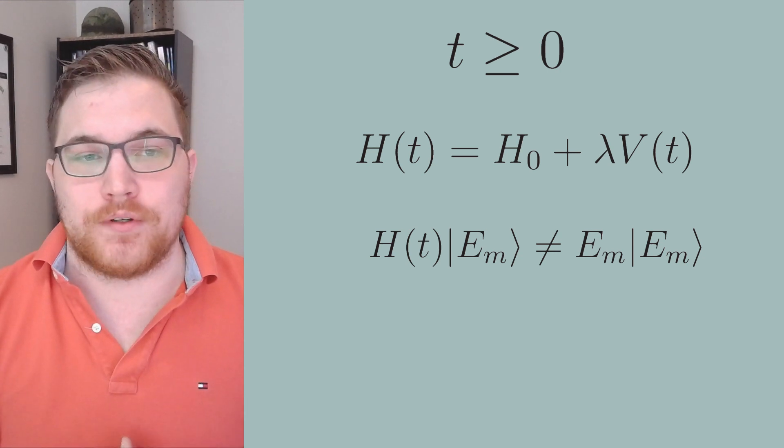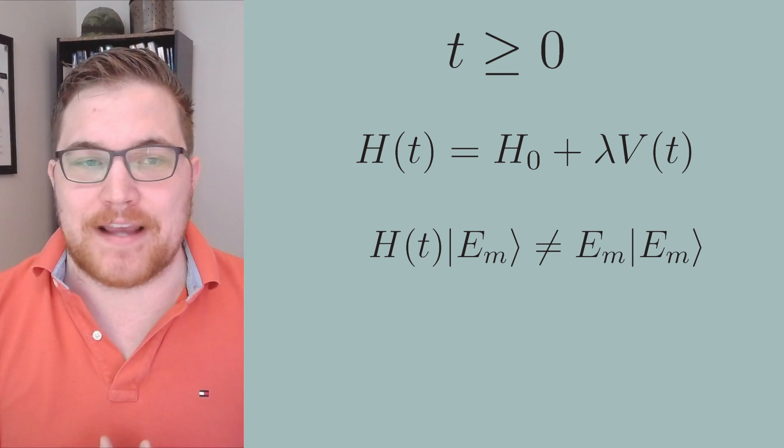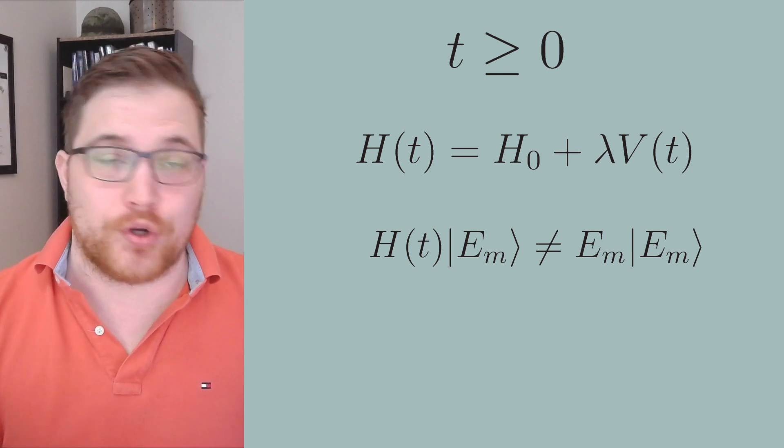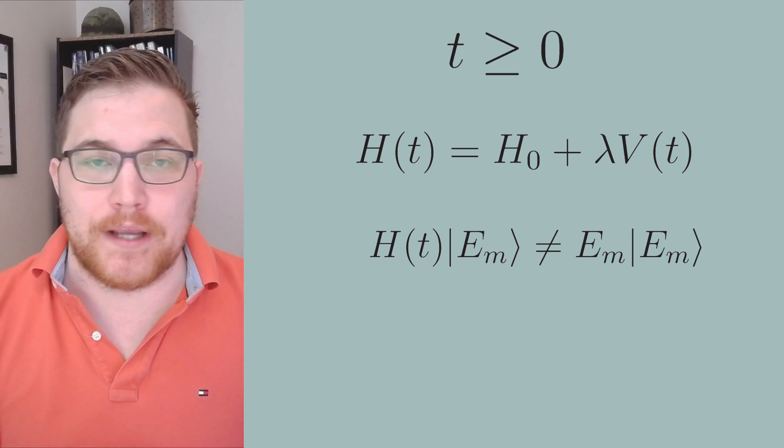I will hereby denote the interaction picture state as having a subscript i. Without a subscript, you can assume it's a Schrödinger picture state. The same will apply to observables.